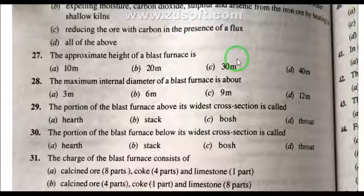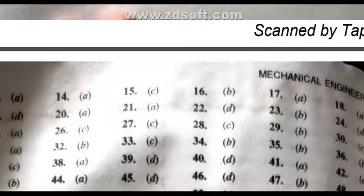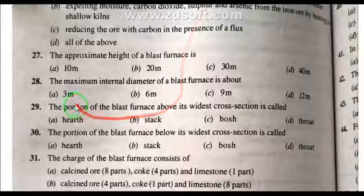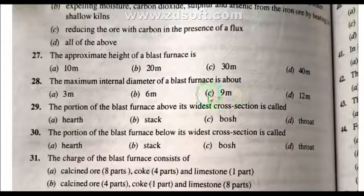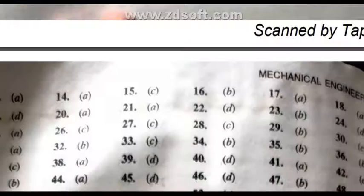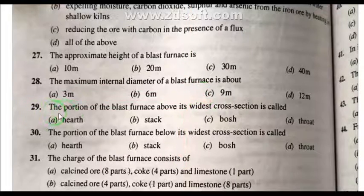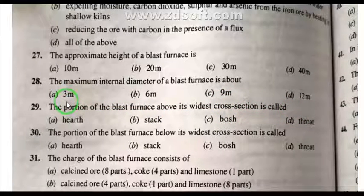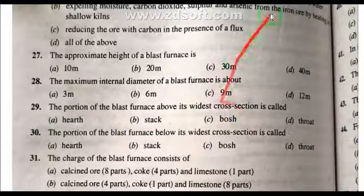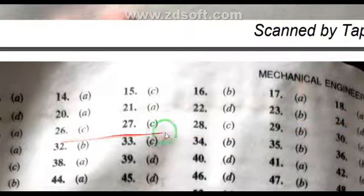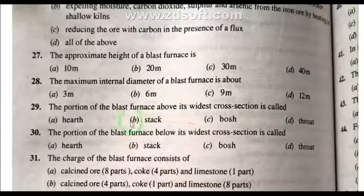Question 28: The maximum internal diameter of a blast furnace is about 9 meters. Question 29: The portion of the blast furnace above its widest cross-section area is called the stack.